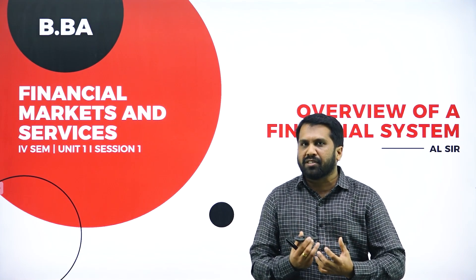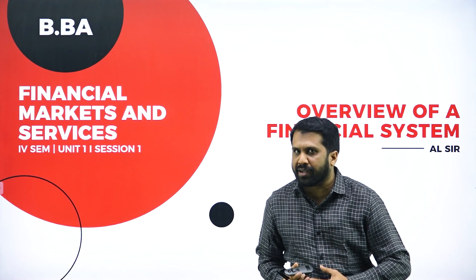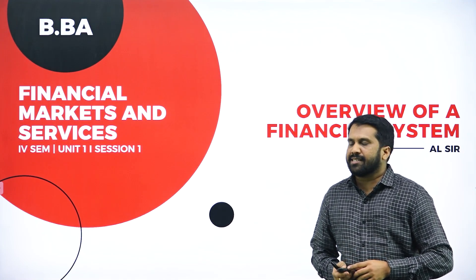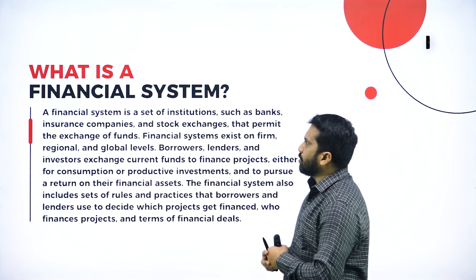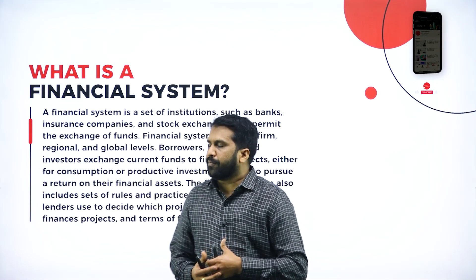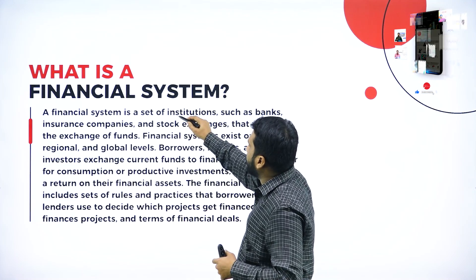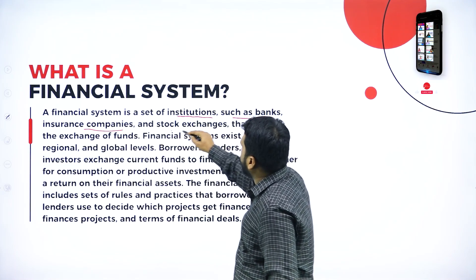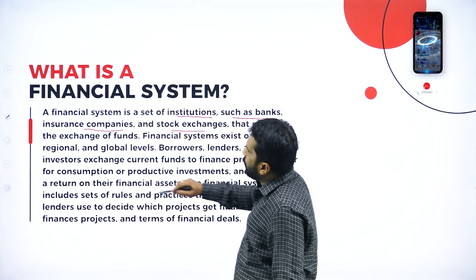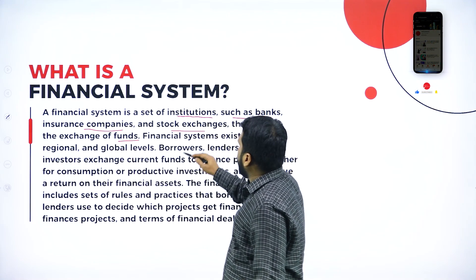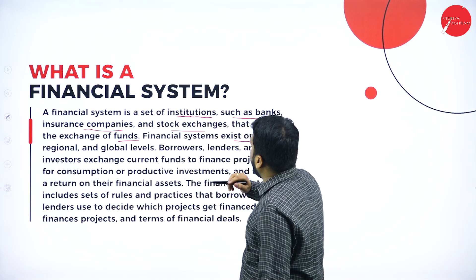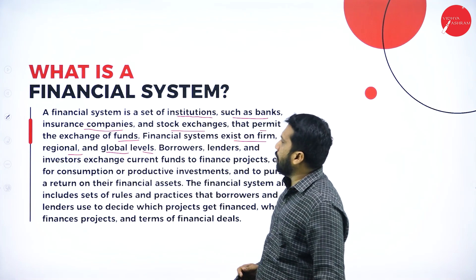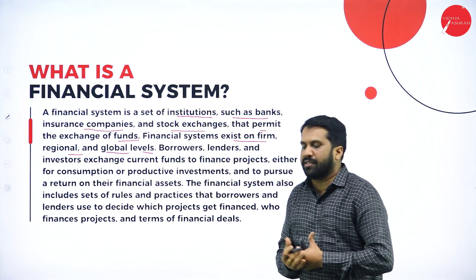We will discuss the overall picture and introduction of the financial system. The financial system is a set of institutions such as banks, insurance companies, and stock exchanges that permit the exchange of funds. The financial system exists on firm, regional, and global levels.